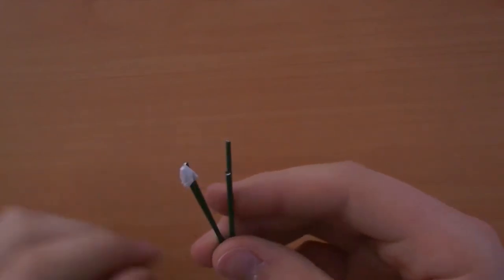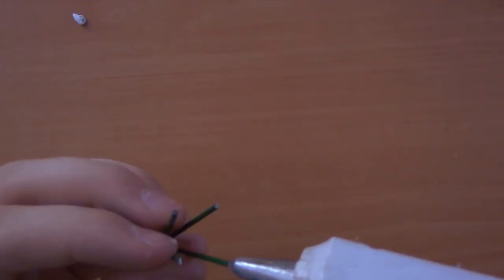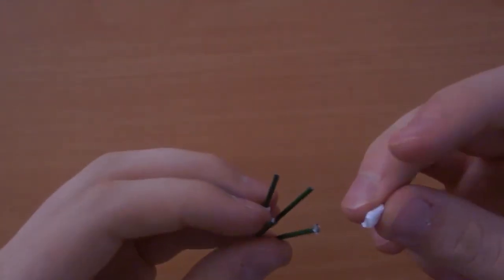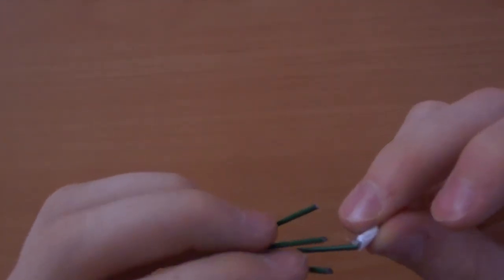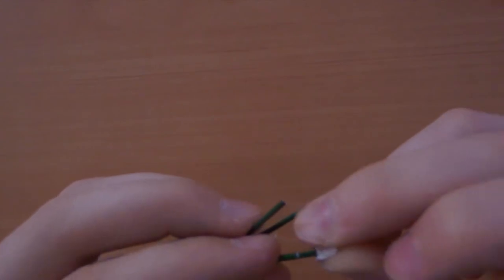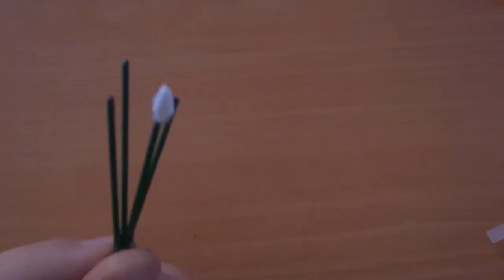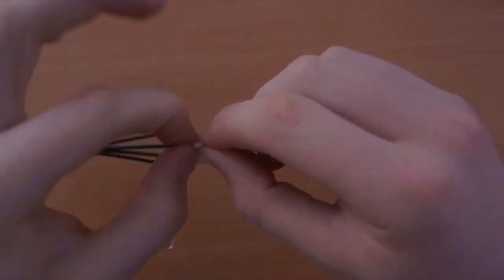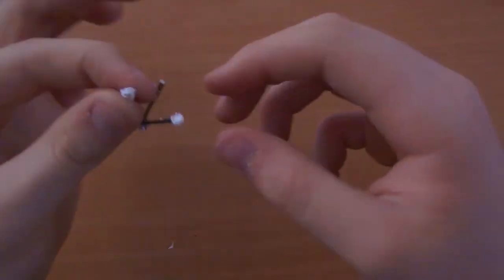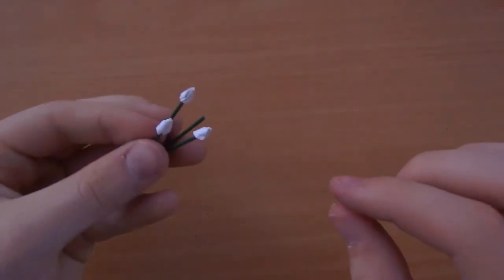You're now going to take the tip of the baby's breath that you just created, remove it, apply some glue, then reapply the baby's breath in the previous hole that you had. Then simply mold it on and make sure that there's no external glue. You're going to do this again with the second one, and again, and again.